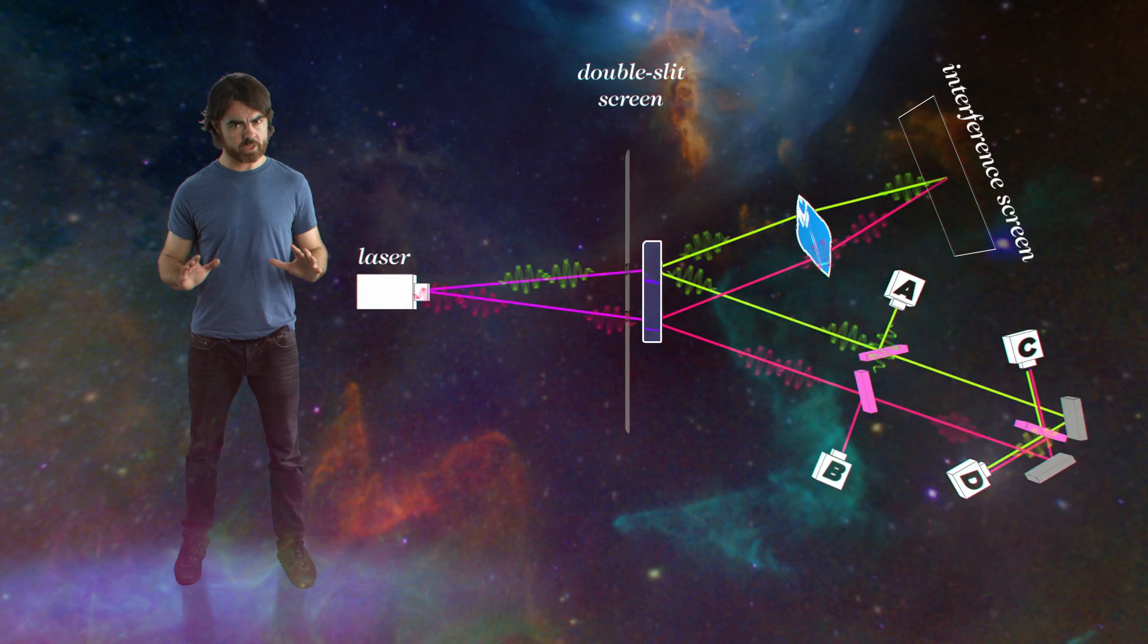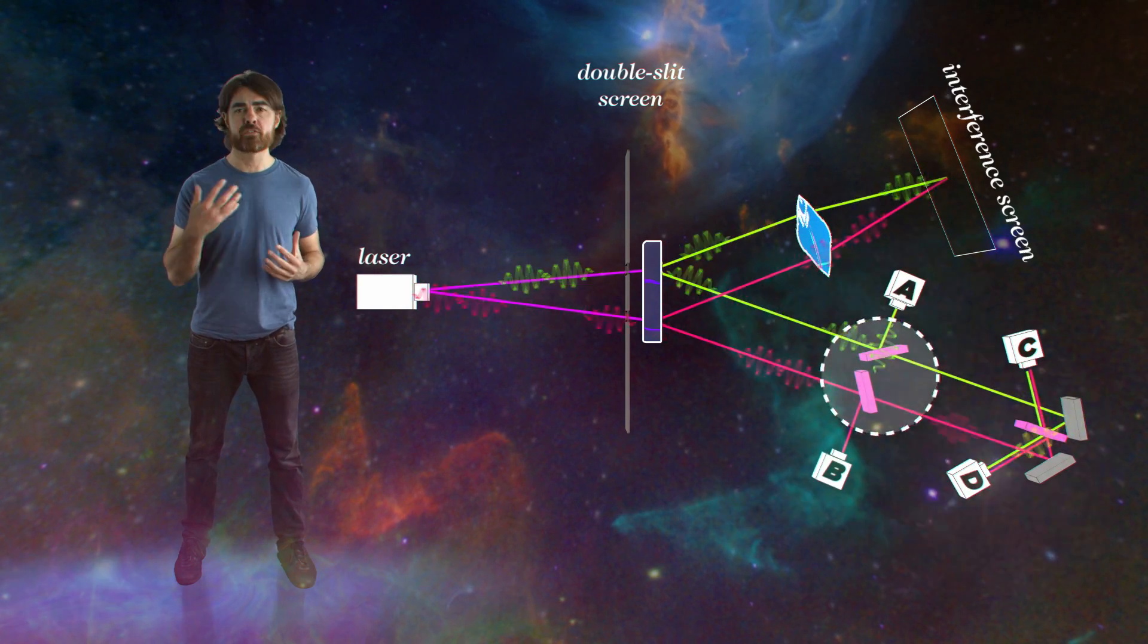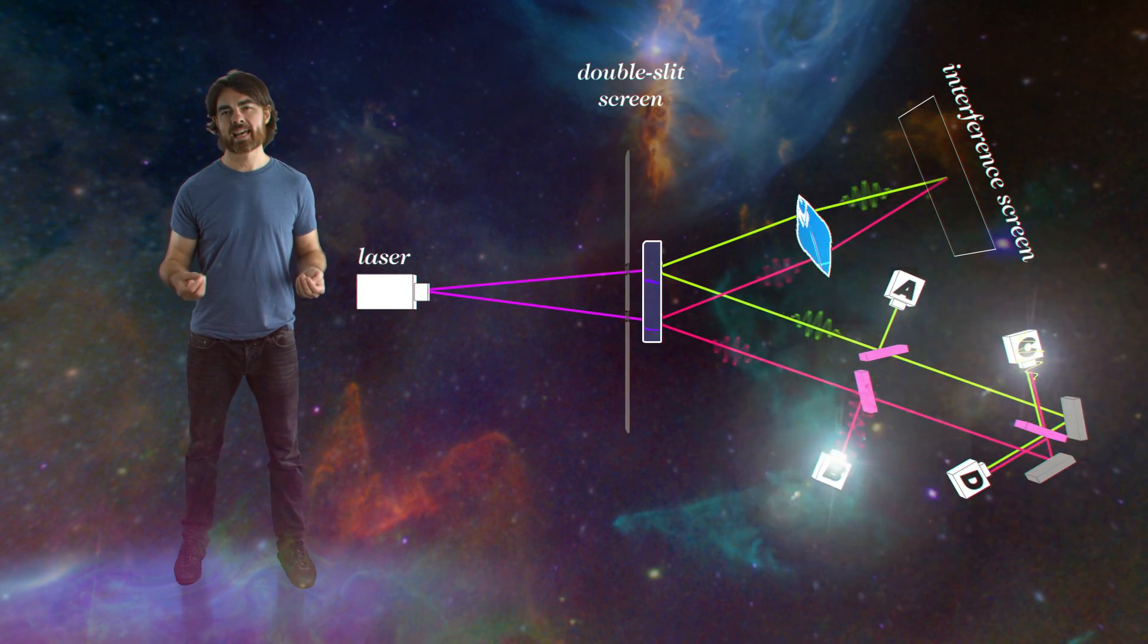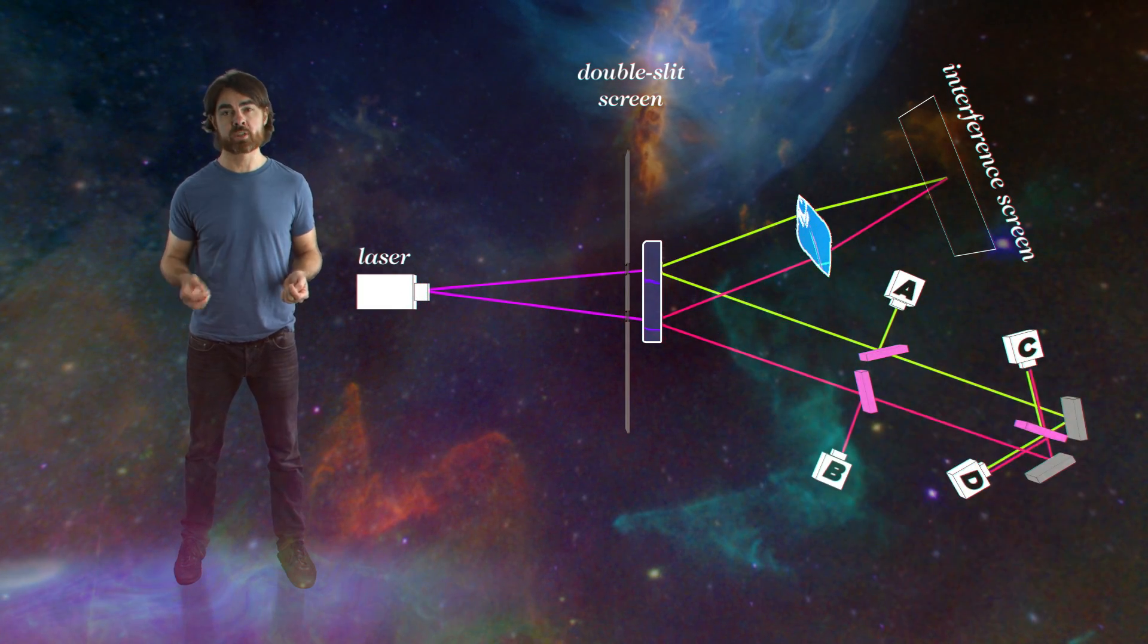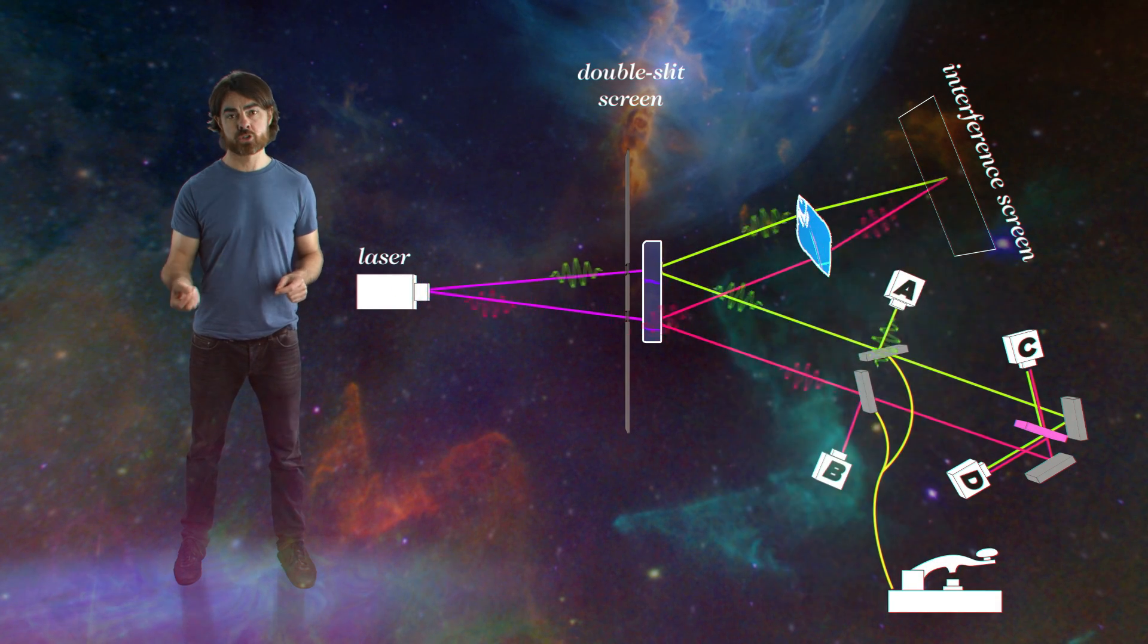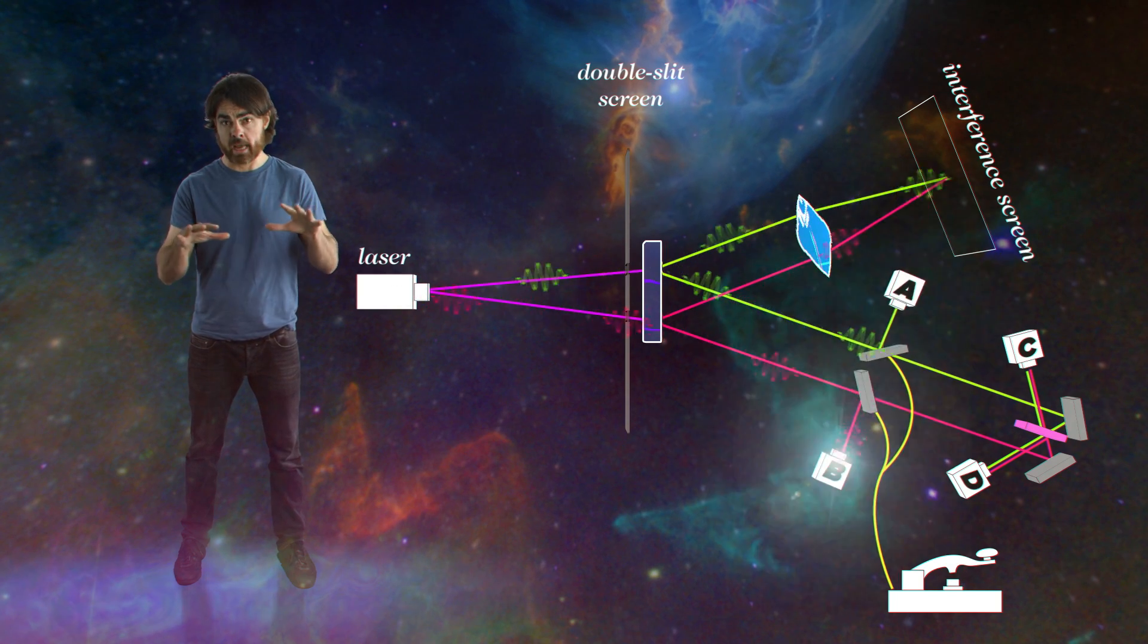That choice is made by these beam splitters, which randomly reflect 50% of photons and let 50% pass through. But what if we could make this choice? Let's replace these beam splitters with mirrors attached to a switch. With the mirrors in place, photons are reflected to the which-way detectors and no interference pattern is formed.